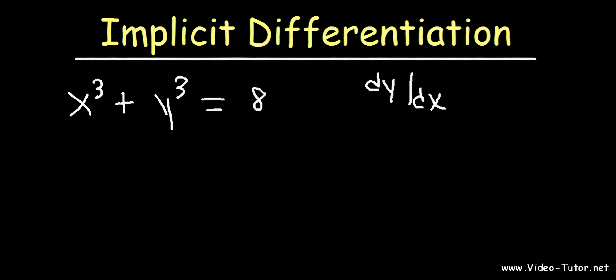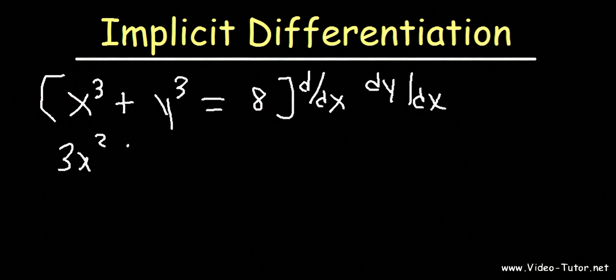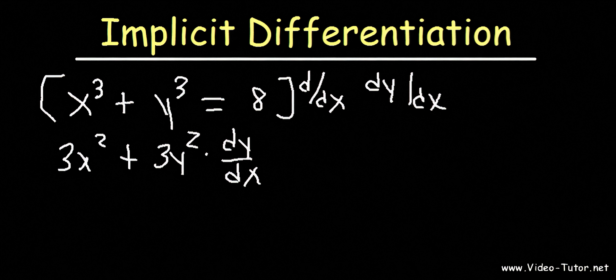So what we need to do is differentiate both sides with respect to x. The derivative of x to the third is 3x squared. And the derivative of y to the third is 3y squared times dy/dx. For these kinds of problems, any time you differentiate a y value, add dy/dx to it.